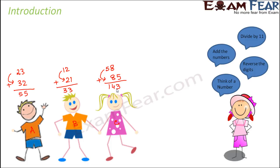The teacher asked them to divide the sum by 11. You divide 55 by 11, you divide 33 by 11, and you divide 143 by 11. How much do you get in this case? You get 5. Here you get 3. And how much do you get in this case? You get 13. They did this as well.